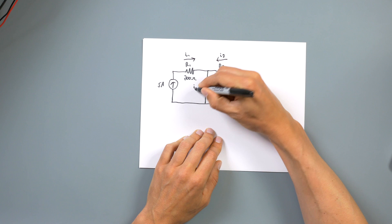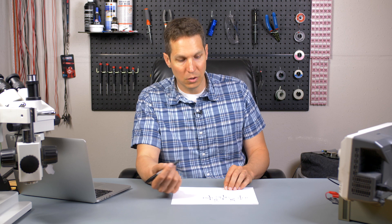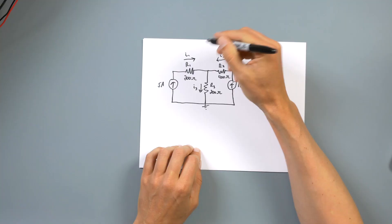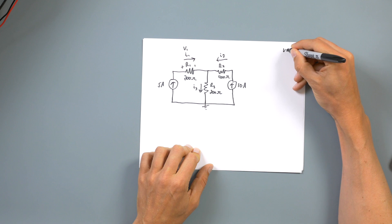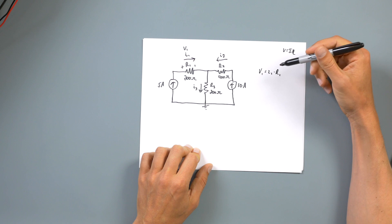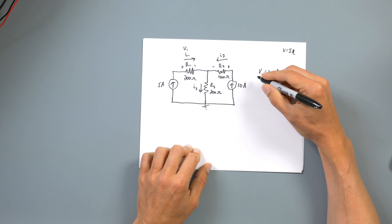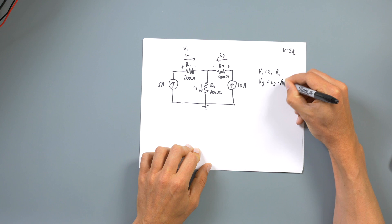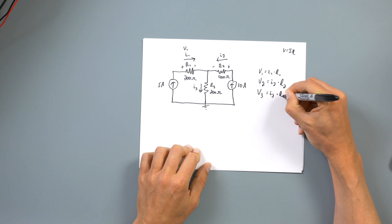For step two, since nobody's assigned a reference ground, I'll assume that ground is down at the bottom. For step three, since I'm saying current is flowing that way, using Ohm's law: V1 equals I1 times R1. Then V2 equals I2 times R2, and V3 equals I3 times R3. Since we already know the current through those two branches from the current sources, we can also just say I1 equals 5 amps and I2 equals 10 amps.